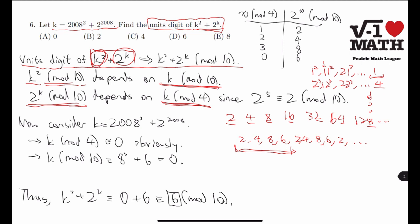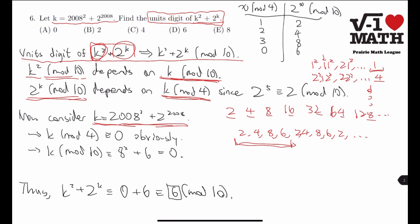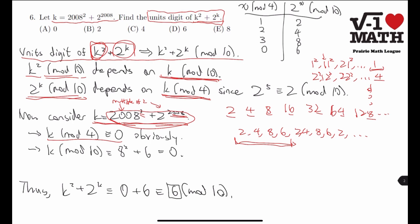Now, consider k equals 2008 to the power of 2 plus 2 to the power of 2008. Notice that this is a multiple of 2. And this is also a multiple of 2. And notice that we have at least one times square each of these. Therefore, 4 divides this entire expression here. In other words, this entire expression is divisible by 4. So k mod 4 equals 0, or is equivalent to 0.